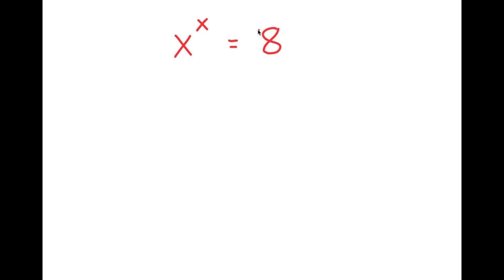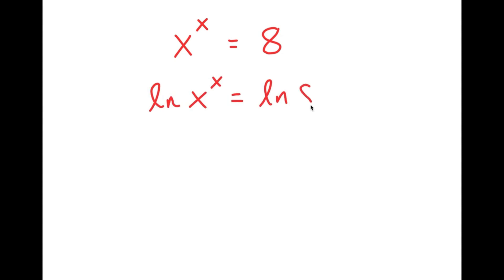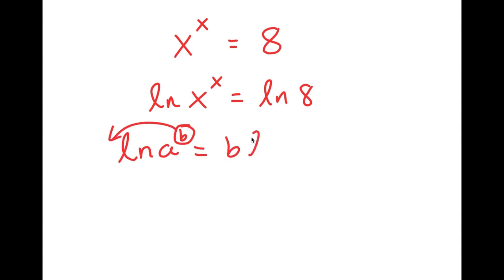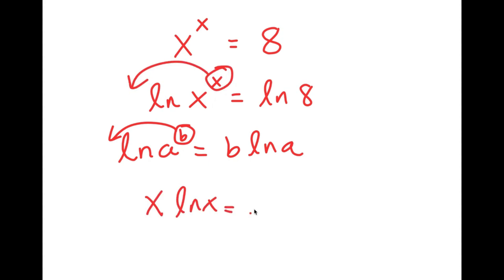In this next problem, we're going to solve the equation x to the power of x equals 8. At first glance, this may look challenging. To solve this, I'll start by taking the natural log on both sides, giving ln(x^x) = ln(8). Using the logarithm property that ln(a^b) = b·ln(a), I can move the exponent x to the front, so now I get x · ln(x) = ln(8).